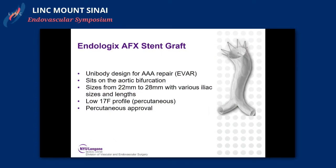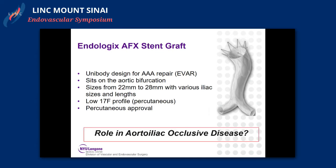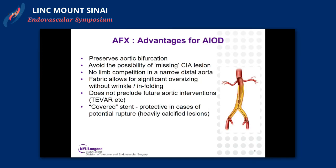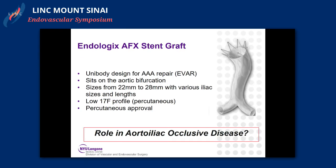The Endologix AFX stent graft is a unibody design. For small distal aortas, it sits on the aortic bifurcation and relies on columnar support. It has sizes ranging from 22 to 28, is low profile at 17 French, and can be used percutaneously. Its role in aorto-iliac occlusive disease, however, remains unclear.